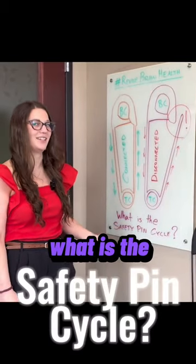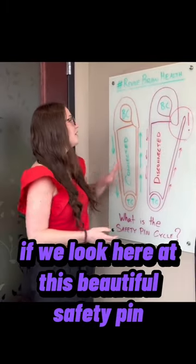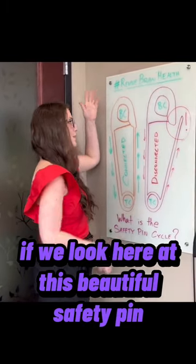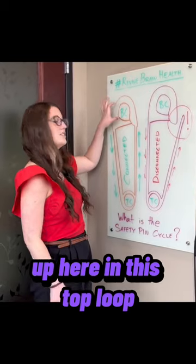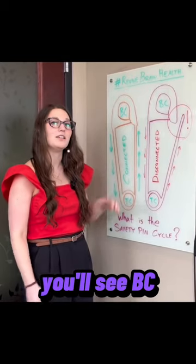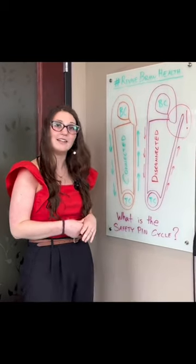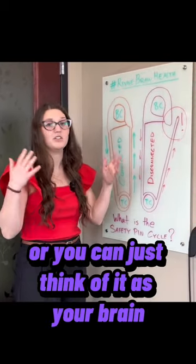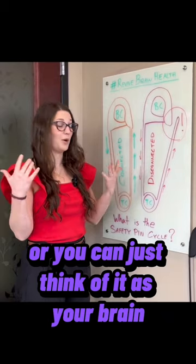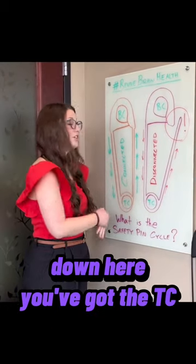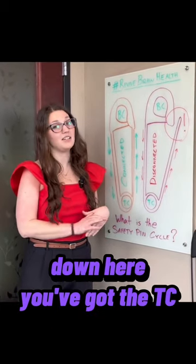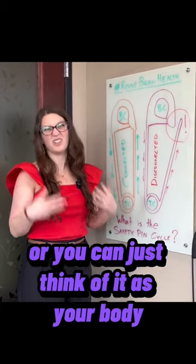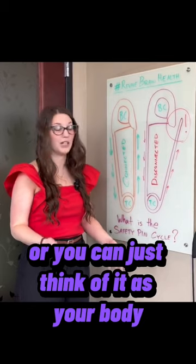That is the safety pin cycle. If we look here at this beautiful safety pin, up here in this top loop you'll see BC, which stands for brain cell, or you can just think of it as your brain. Down here you've got the TC, which means your tissue cell, or you can just think of it as your body.